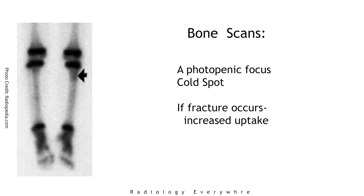On bone scintigraphy, a unicameral bone cyst appears as photopenia or a cold spot. This is referred to as the donut sign, reflecting increased uptake in the periphery and an osteopenic center. If there is a pathological fracture, there will be increased radioisotope activity.